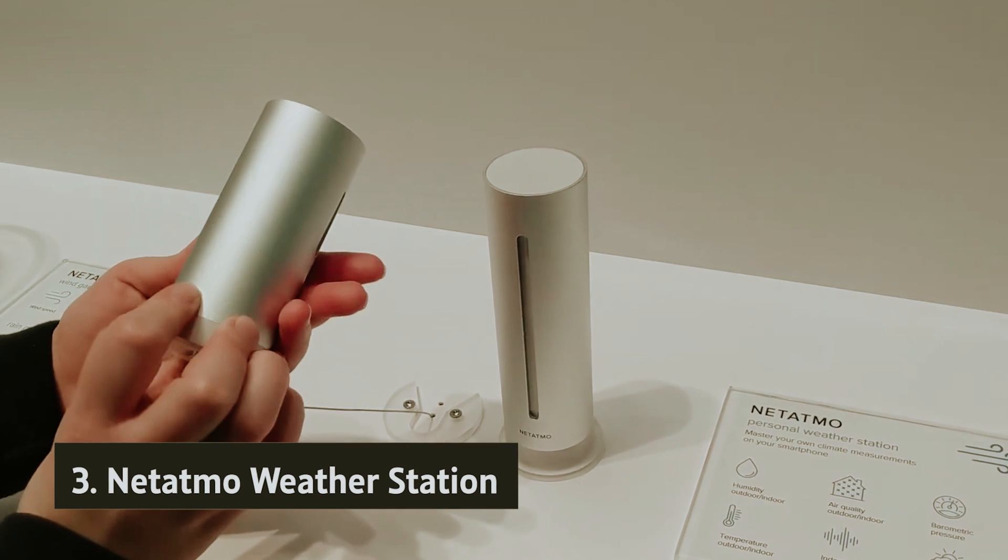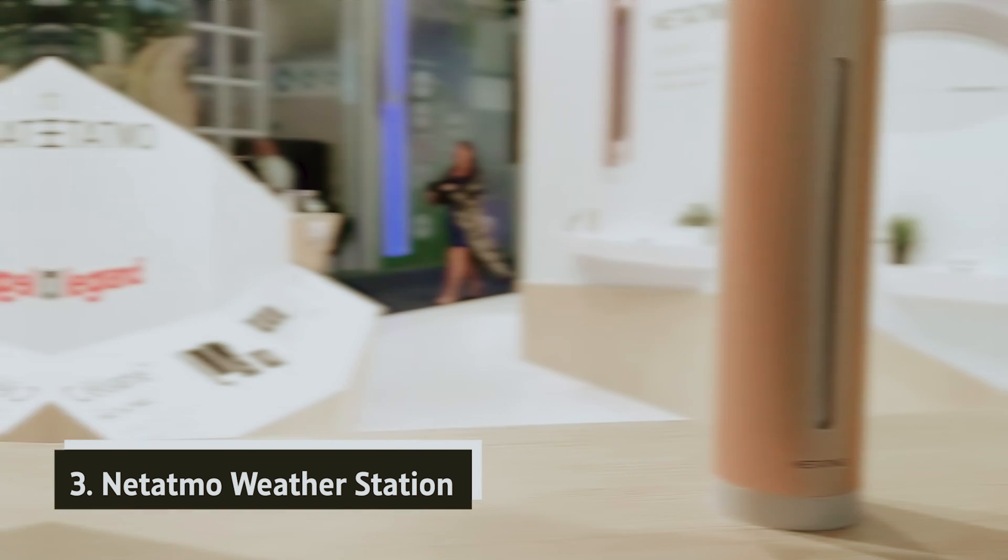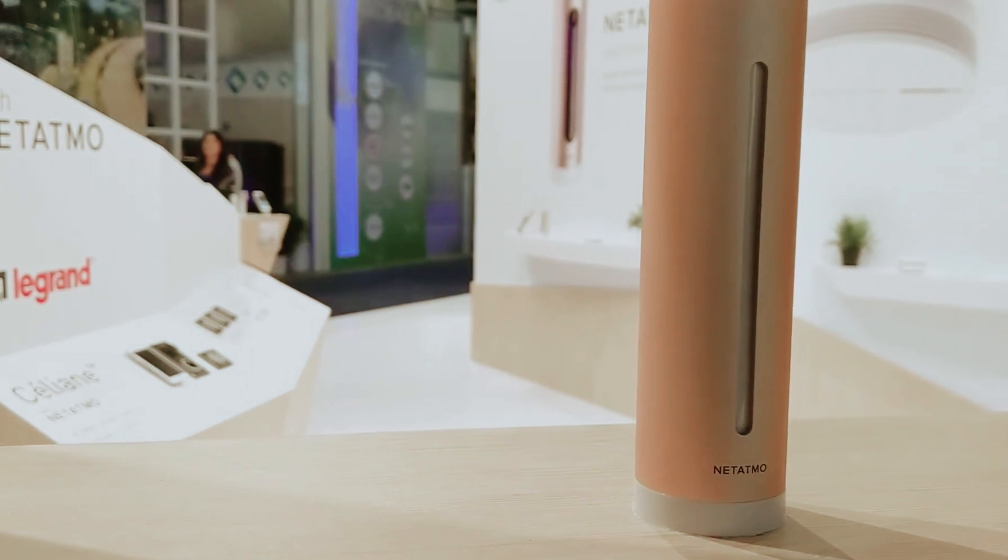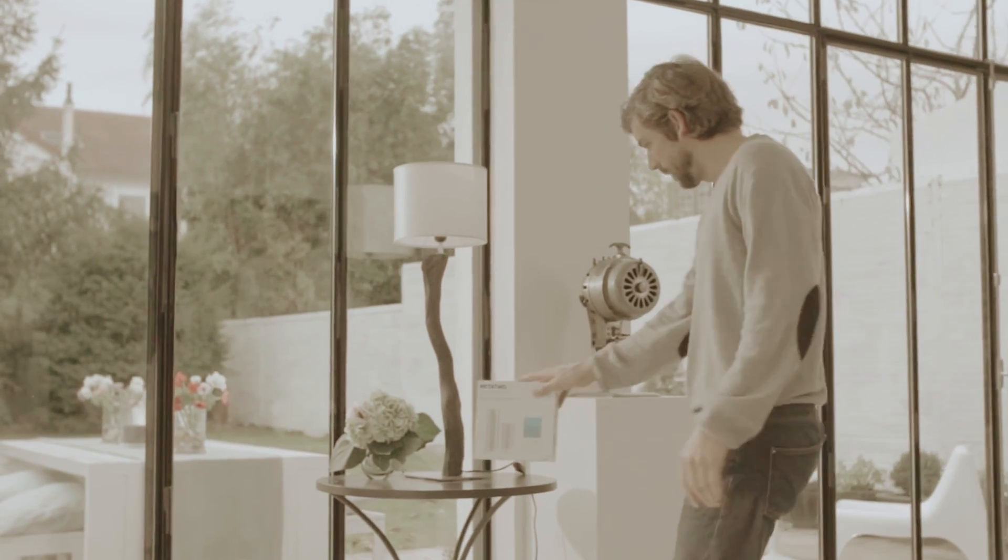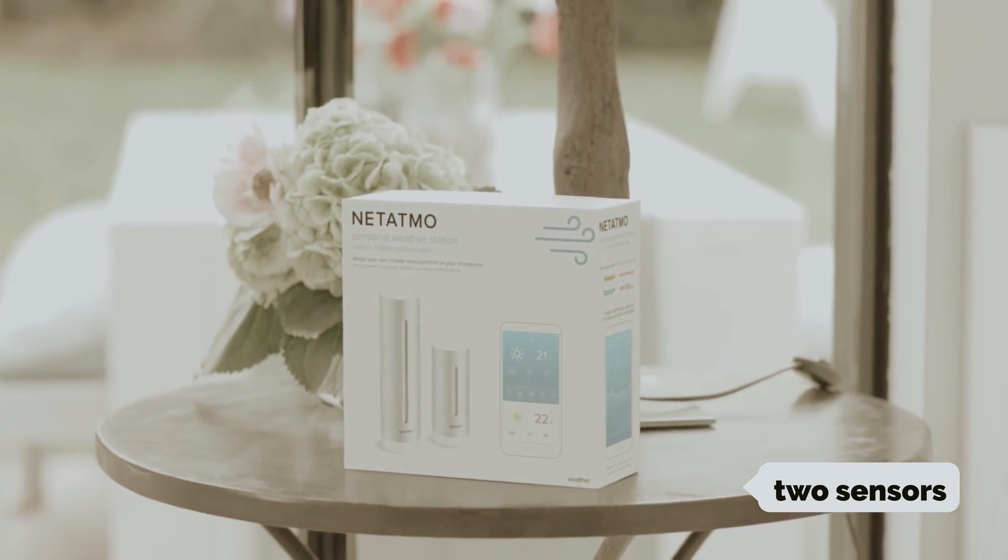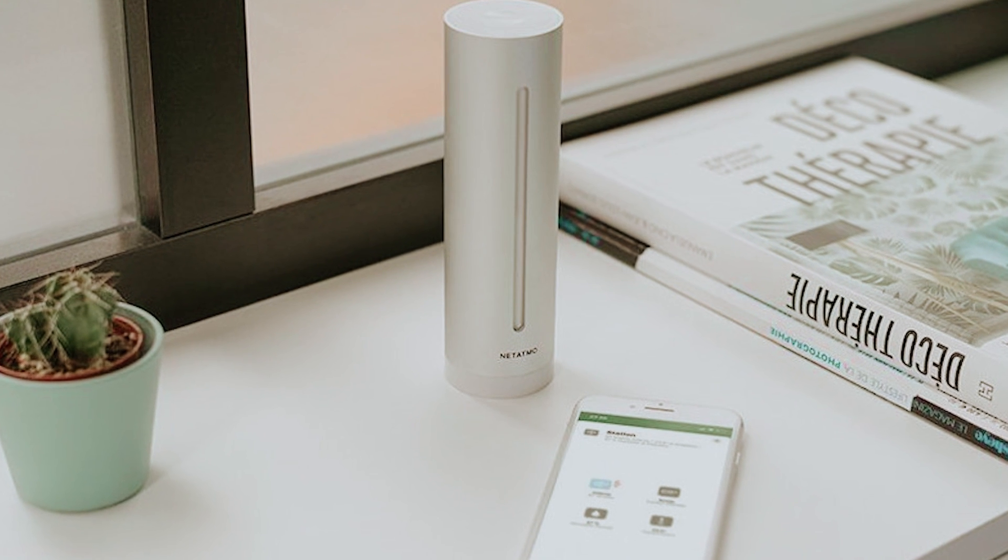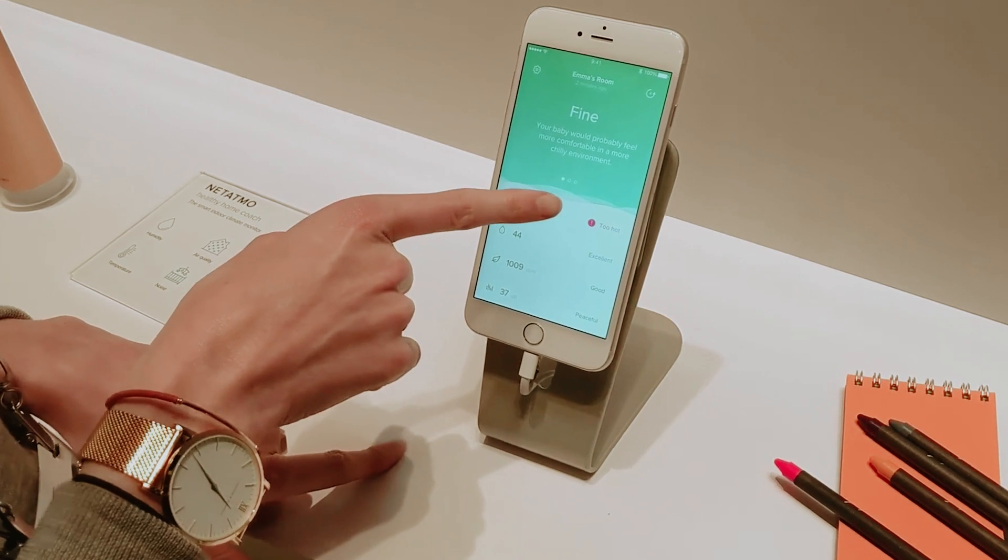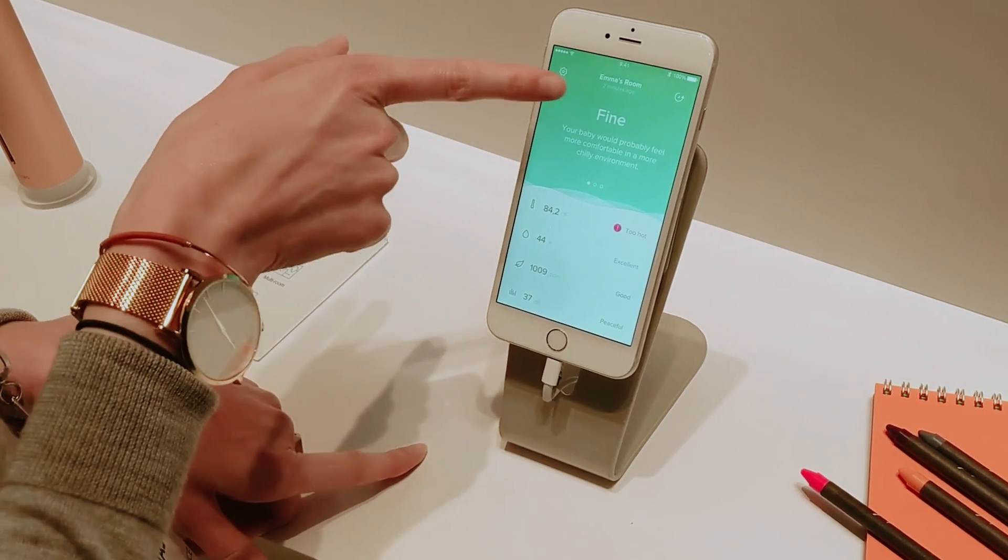Number three, we have the Netatmo Weather Station. The Netatmo Weather Station stands out with its comprehensive capabilities, making it an excellent investment for anyone serious about tracking their environment. This model features two sensors: an outdoor tower powered by batteries, which measures temperature, humidity, and barometric pressure, and an indoor component that monitors carbon dioxide and sound levels, going beyond what many competitors offer.